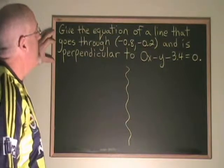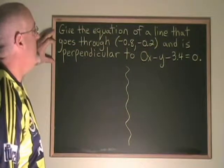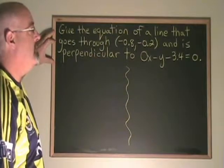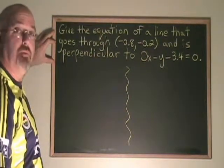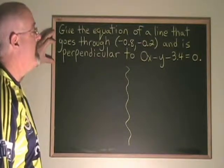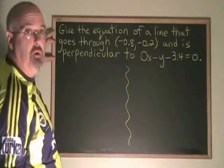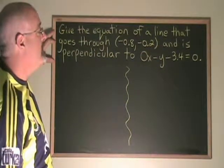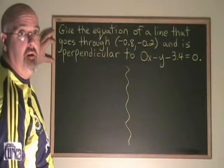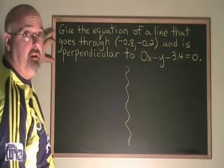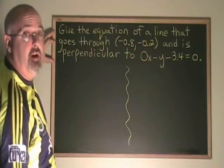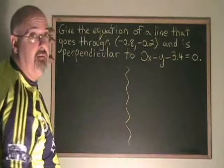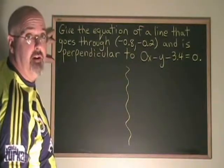In this example, we are being asked to get the equation of the line that goes through the point negative 0.8, negative 0.2, and is perpendicular to 0x minus y minus 3.4 equals 0. Looking at this equation, we can see that there is no x term. So therefore, this is a horizontal line. Any line that is perpendicular to a horizontal line must be a vertical line. And the only line that is vertical that goes through this point would have to have the equation x equals negative 0.8.